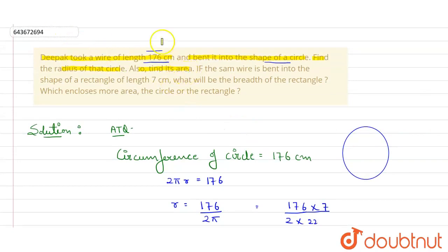Now we have completed the question till here. It is given that if same wire is bent into shape of rectangle of length 7 centimeter, what will be the breadth of the rectangle?